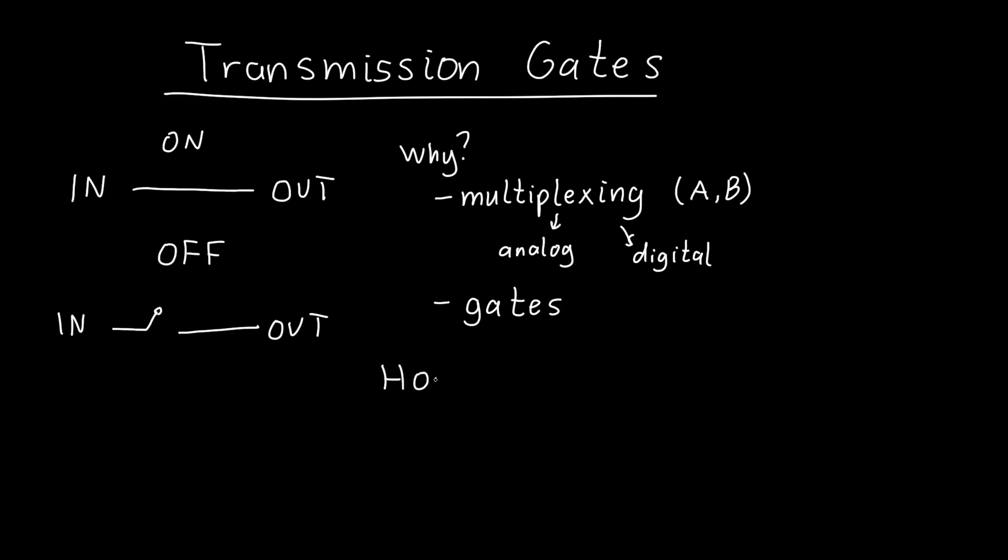So how do we build a transmission gate? Well, we know some things that happen to act like switches. That would be transistors.